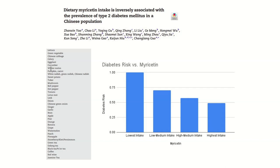Finally, there's not a ton of evidence about myricetin in humans, but this study did look at long-term diabetes risk based on how much myricetin you consume. The people who consume the most myricetin have the lowest risk of diabetes. There are a lot of potential confounders in this study — most myricetin comes from vegetables, coffee, wine, and tea. I take it for what it's worth.